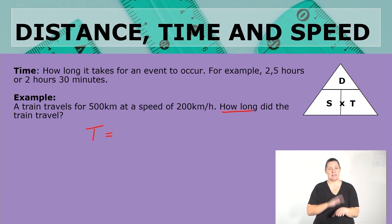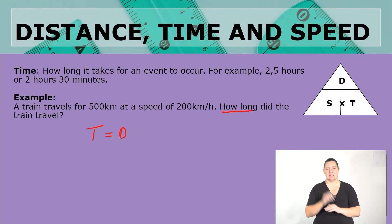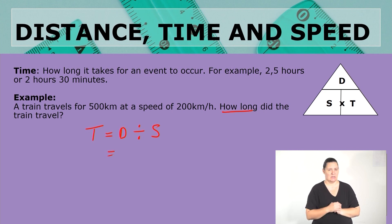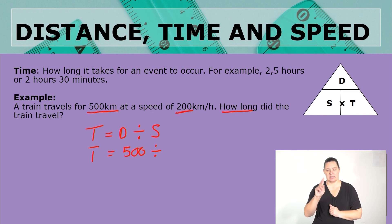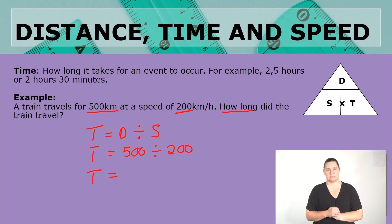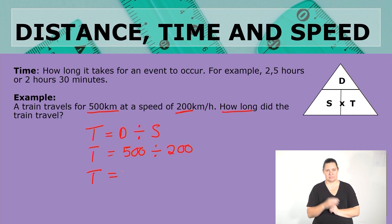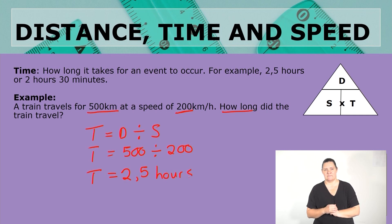Do you know what the formula is for time? Yes, you are correct. Our formula will be distance divided by speed. So what was the distance here? The distance was 500 kilometers. And what was the speed? The speed was 200 kilometers per hour. 500 divided by 200 gives us two and a half hours.